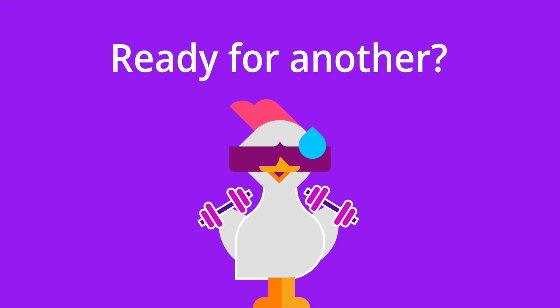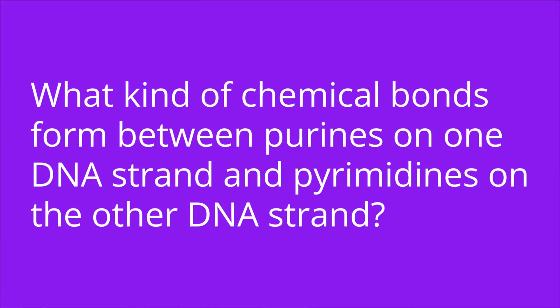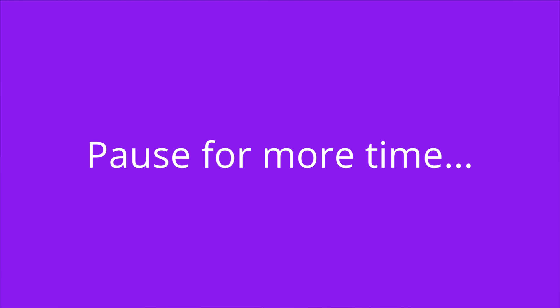Question number three. What kind of chemical bonds form between purines on one DNA strand and pyrimidines on the other DNA strand? The answer is hydrogen bonds.